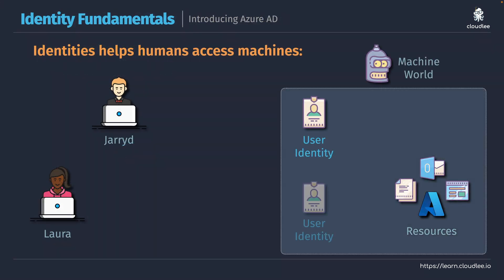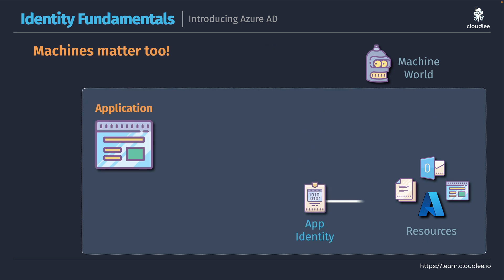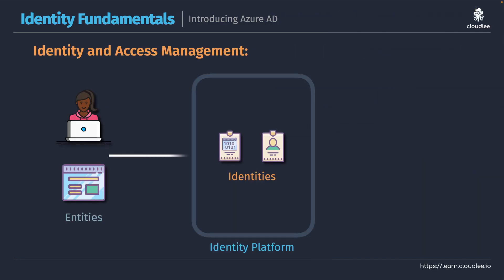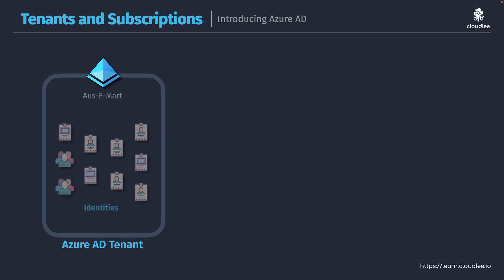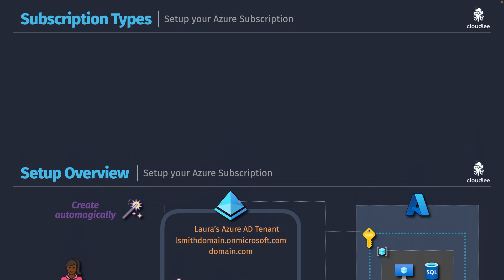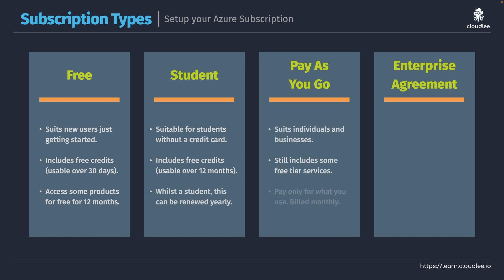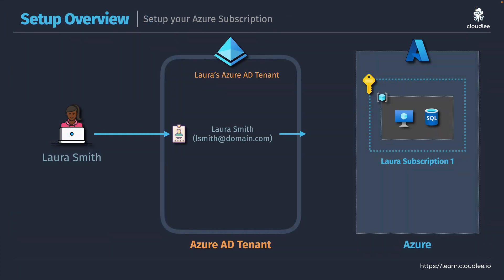You'll start by learning about identity and a really critical Microsoft product called Azure Active Directory. This will help you to understand how Azure Active Directory is used to control access to your Azure environment. Then after we cover the various Azure subscriptions that you can sign up for, we'll go ahead and create your own free Azure trial subscription and your own Azure Active Directory tenant.